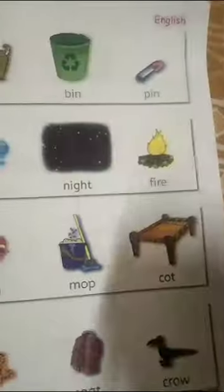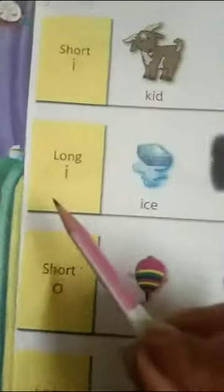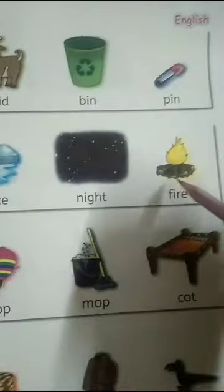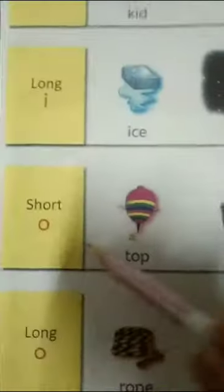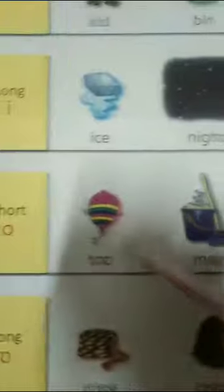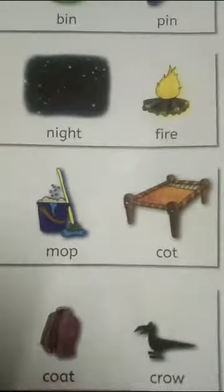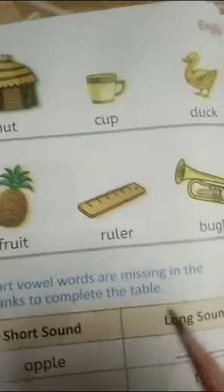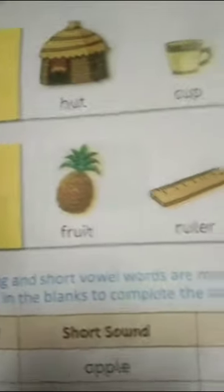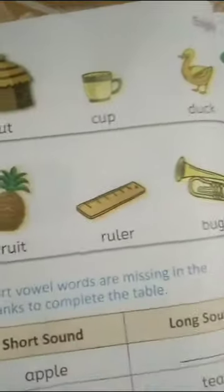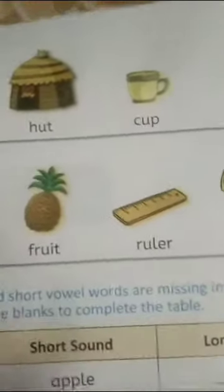Shorty: Kid, Pin. Longy: Ice, Night, Fire. Shorty: Top, Cut. Longy: Row. Shorty: Hat, Cup, Duck. Longy: Fruit. Shorty: Kid, Hint.